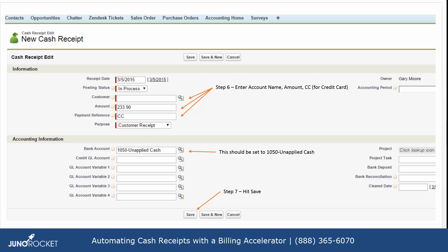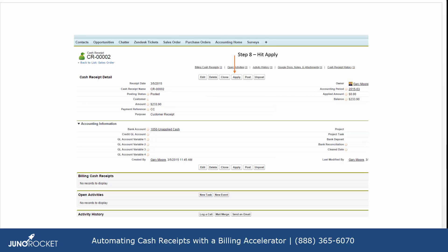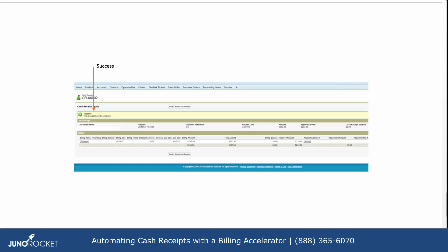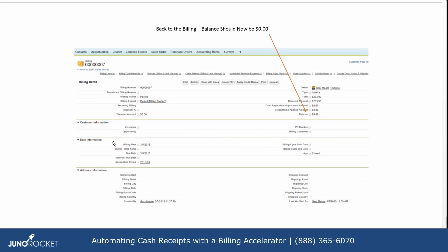Once that's done, you go ahead and apply that cash receipt to the open invoice for the particular customer, and that will happen on the following screen. You hit this little button here and it moves the amount over, and then you can hit Save. You will see that the charge has been successfully applied.